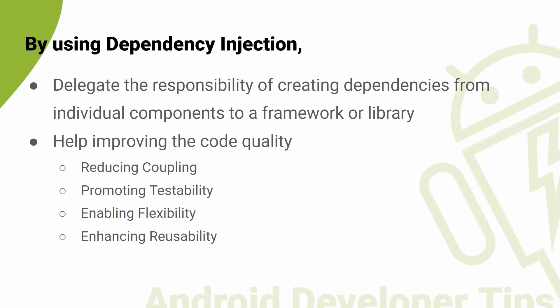This can help to reduce development time and improve overall code quality by promoting consistency and standardization. Finally, DI can improve code maintainability by making it easier to identify and fix issues in the code. By making the code more modular and testable, it becomes easier to understand and modify, which can lead to fewer bugs and a more reliable application.